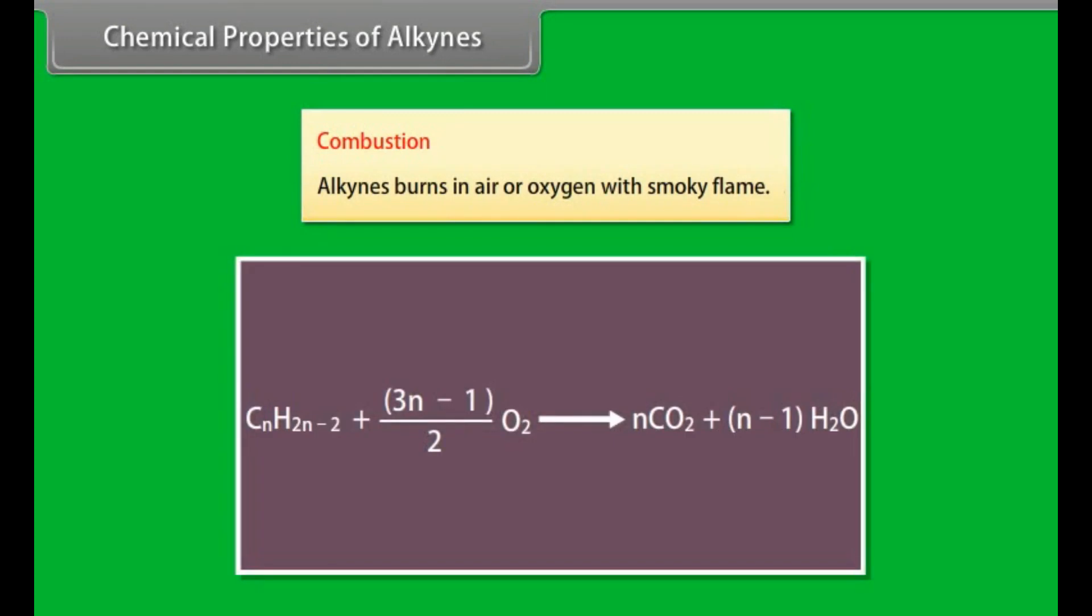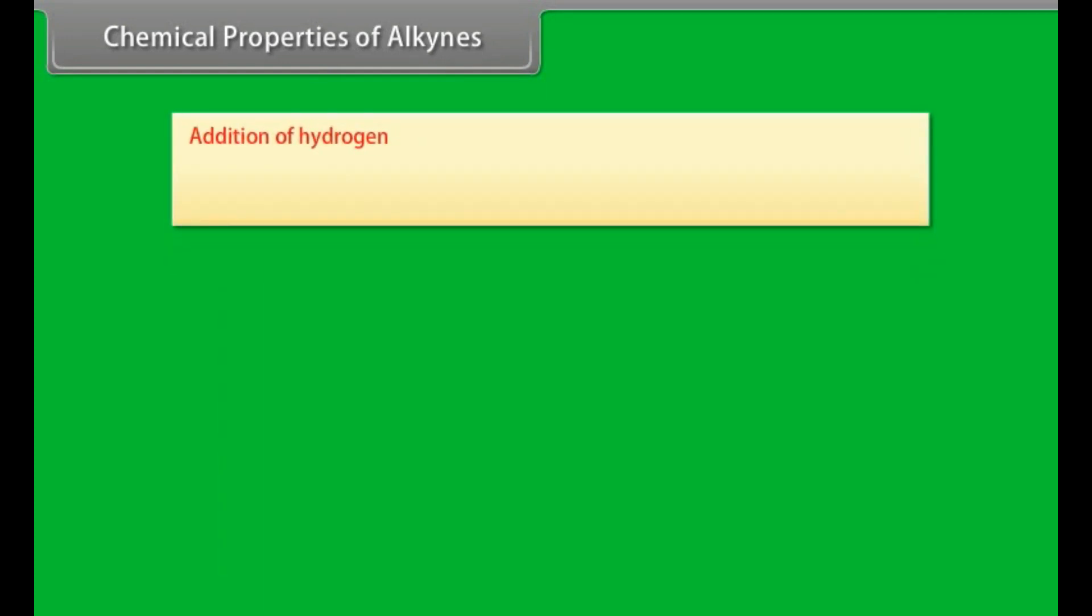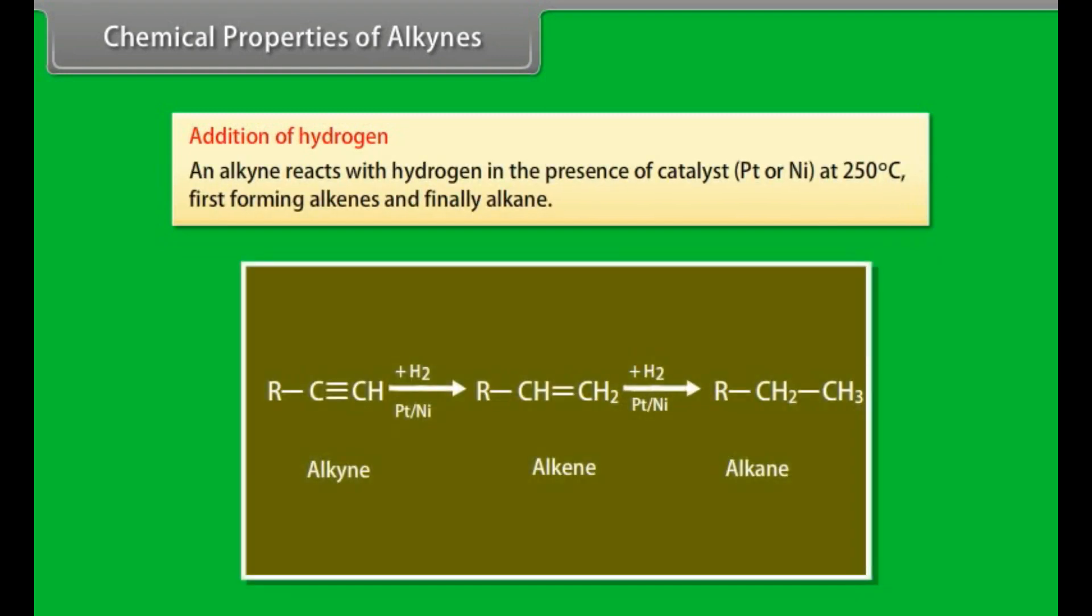Chemical properties of alkynes. Combustion. Alkynes burn in air or oxygen with smoky flame. Addition of hydrogen. An alkyne reacts with hydrogen in the presence of catalyst Pt or Ni at 250 degrees centigrade, first forming alkenes and finally alkanes.